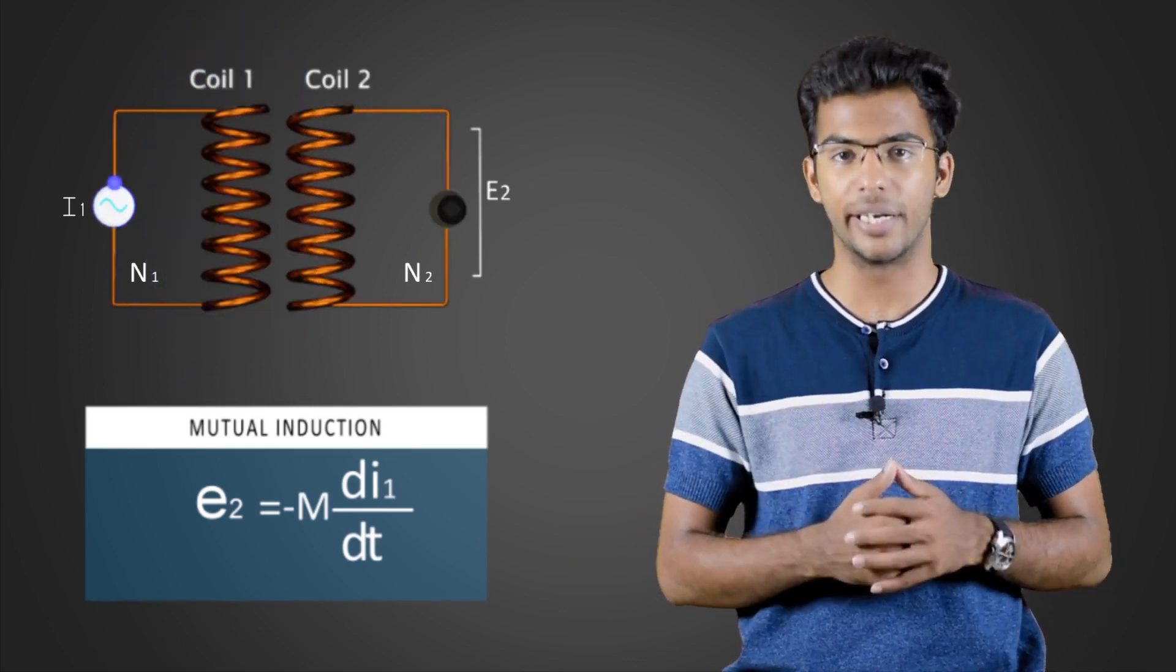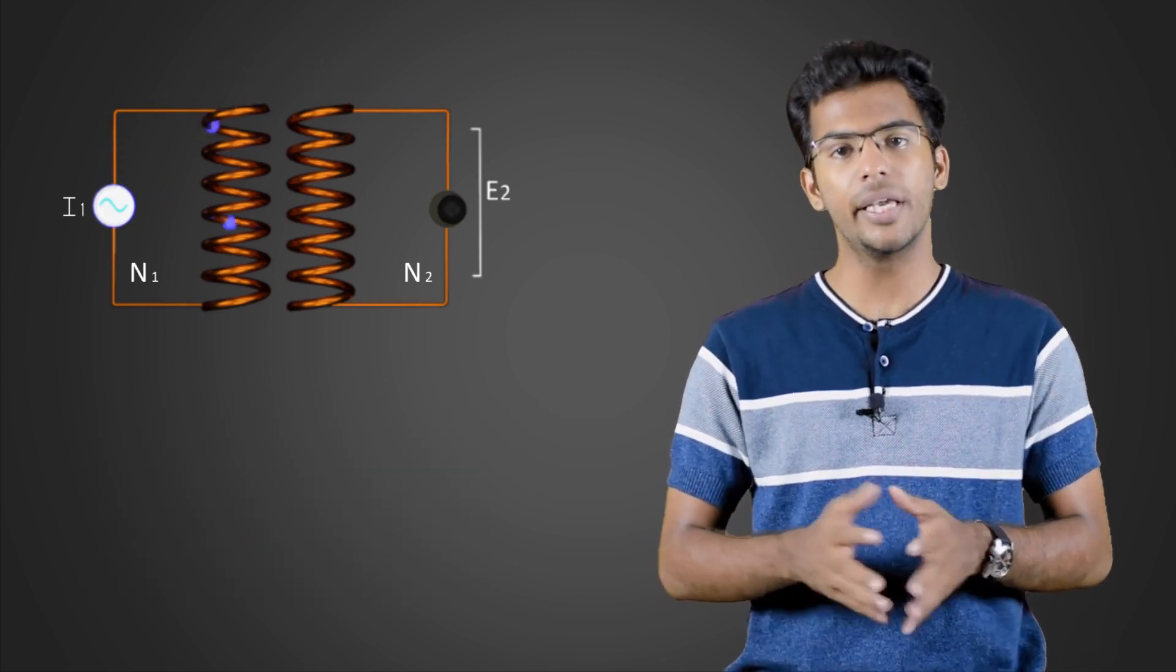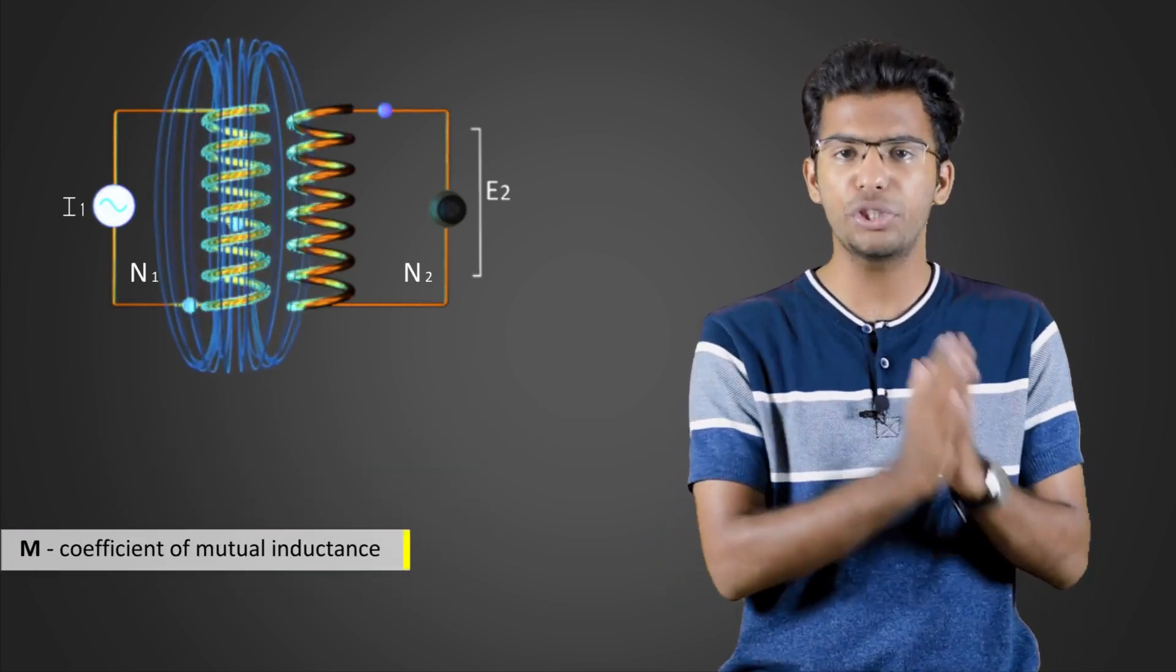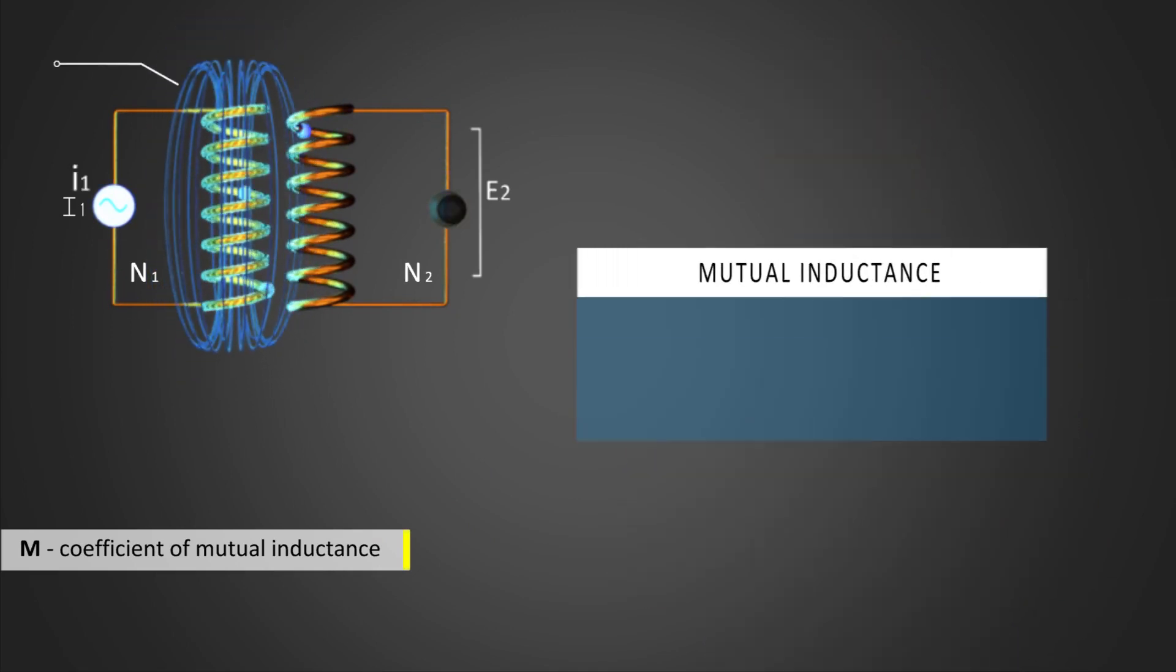Here M is the coefficient of mutual inductance. It is the number of flux lines linking with N number of turns in coil two per ampere in coil one. We denote flux as phi.